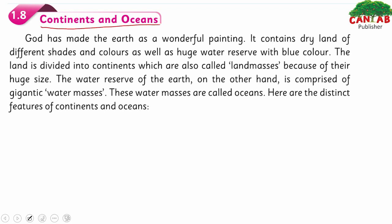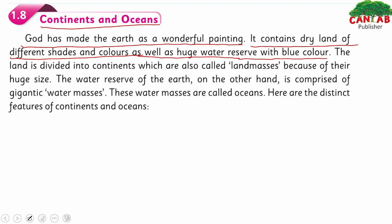As you all know, God — Allah — has made the Earth as a wonderful painting. It contains dry land of different shades and colors, as well as huge water reserves with blue color. The land is divided into continents, which are also called land masses because of their huge size. The water reserve of the Earth, on the other hand, is comprised of gigantic water masses.